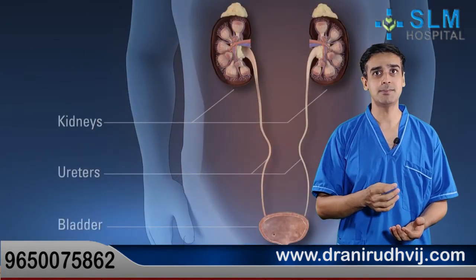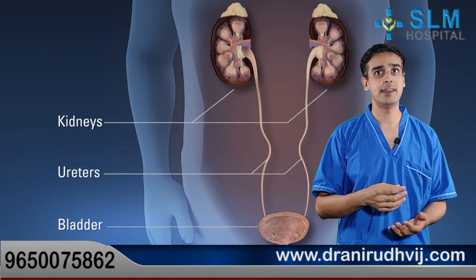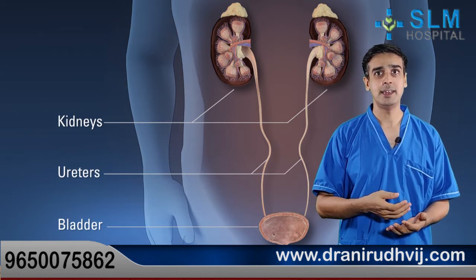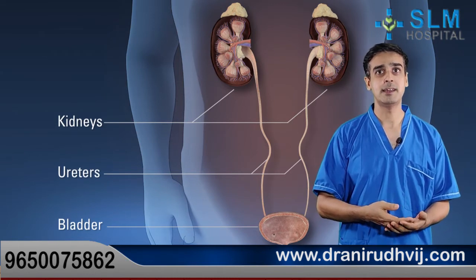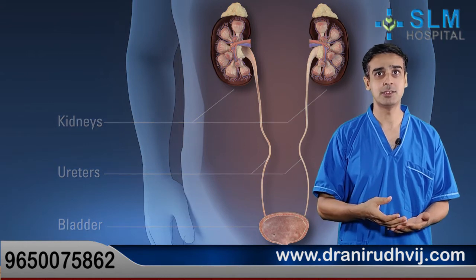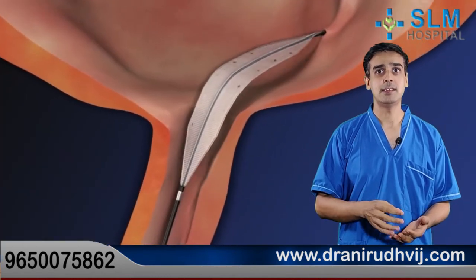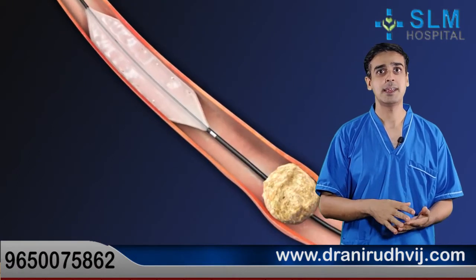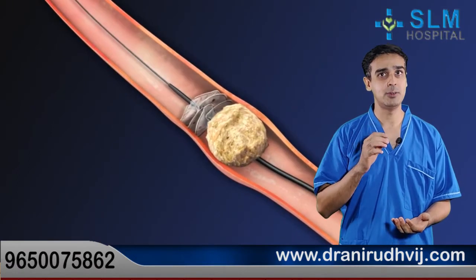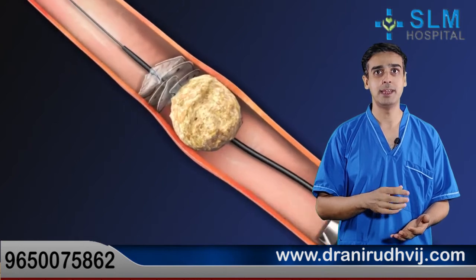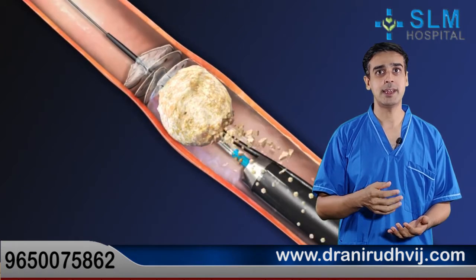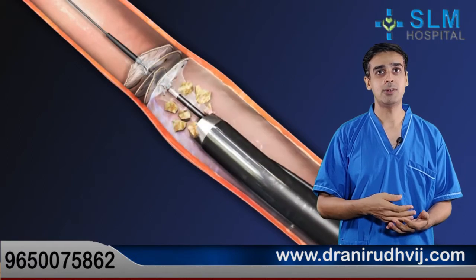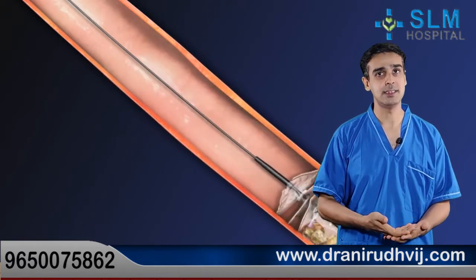If the stone is present lower in the urinary tract — like the ureter or the urinary bladder — it need not be removed with a skin puncture. Rather, a small instrument known as a cystoscope or a ureteroscope can be passed directly through the urethral opening, and the stone can be extracted directly from the body without any external skin incision.